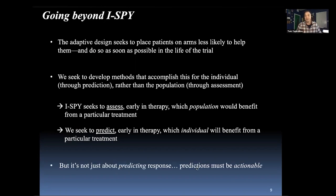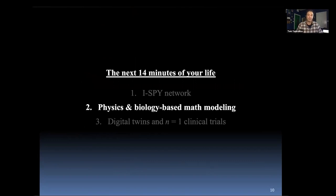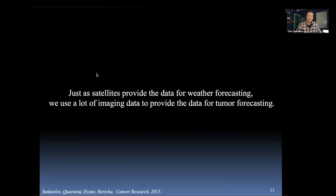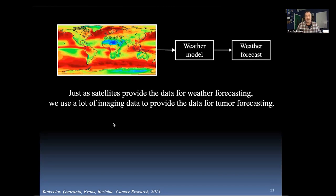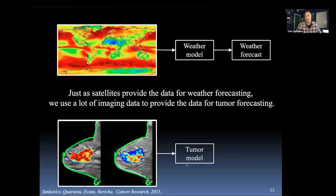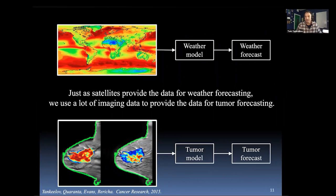It's not just about predicting response — the predictions have to be actionable so we can guide interventions. Our goal is to build mathematical models that incorporate patient-specific information to make patient-specific predictions. The metaphor we use is weather forecasting: just as satellite data on humidity, temperature gradients, pressure gradients, and wind speed populates variations of the Navier-Stokes equations to produce a weather forecast, we use imaging data — measurements of blood flow and cellularity — going into a tumor model to make a tumor forecast. This paradigm was laid out in a perspective piece about seven years ago.